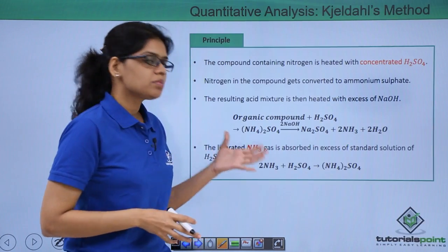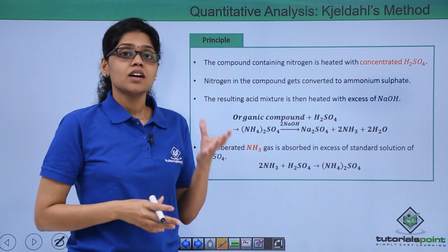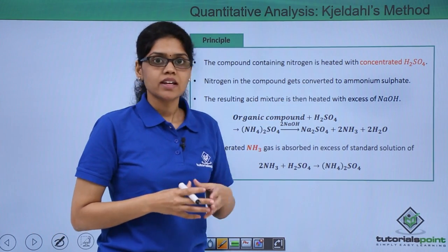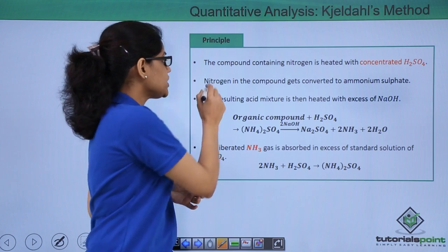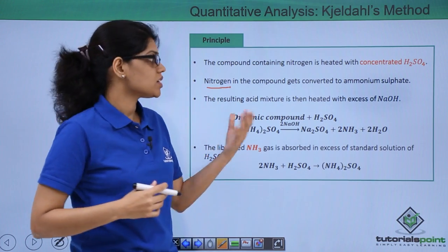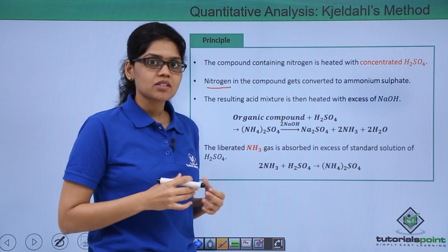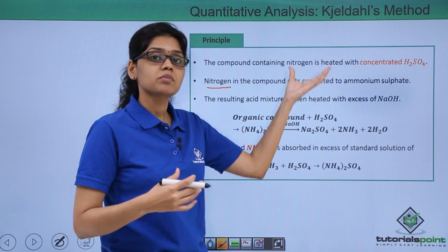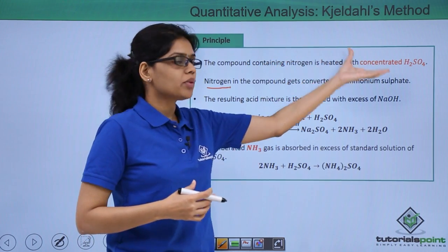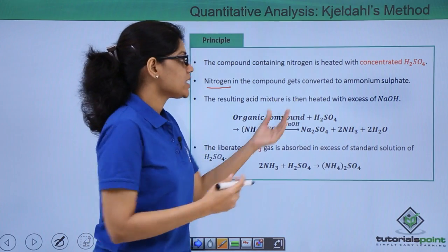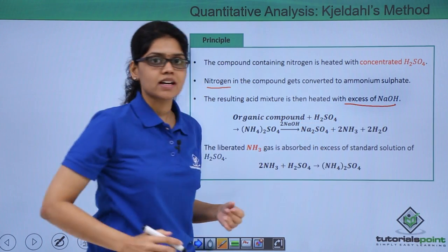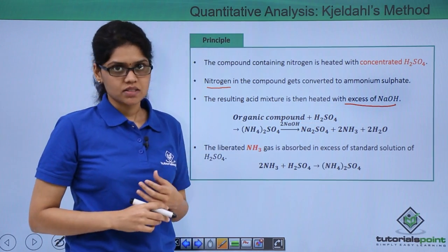The basic principle involved in this method is that we are reacting our organic compound with concentrated H2SO4 and nitrogen in our organic compound gets converted to ammonium sulphate. In the second step, the ammonium sulphate obtained from the reaction is further reacted with excess of NaOH such that liberation of ammonia takes place.